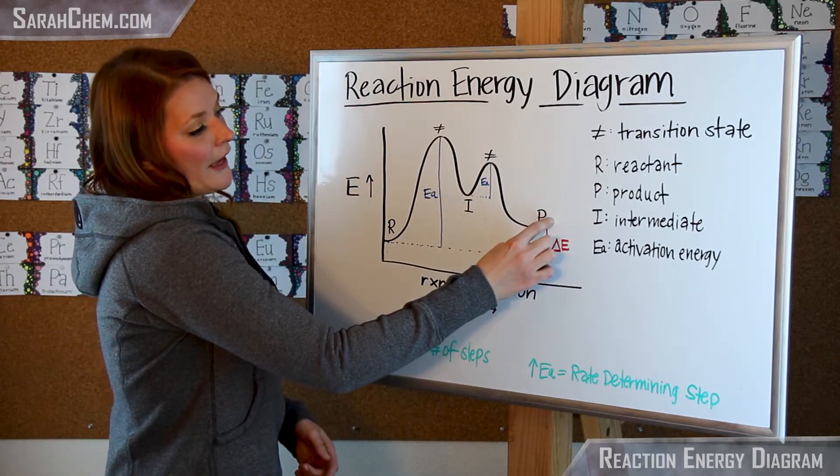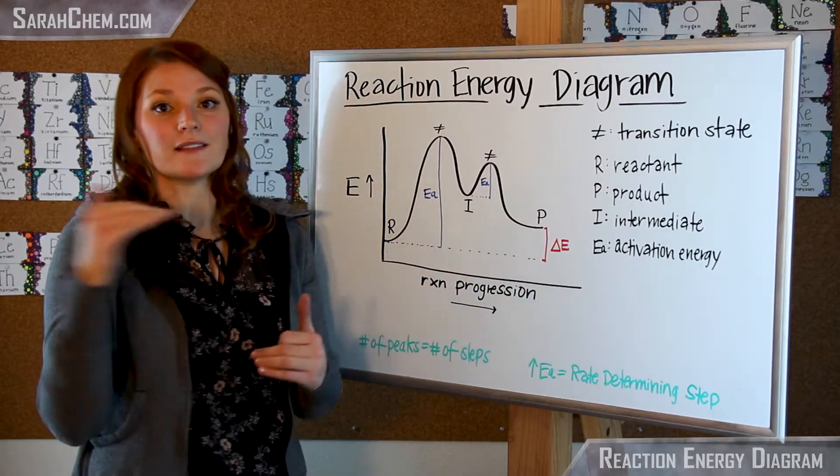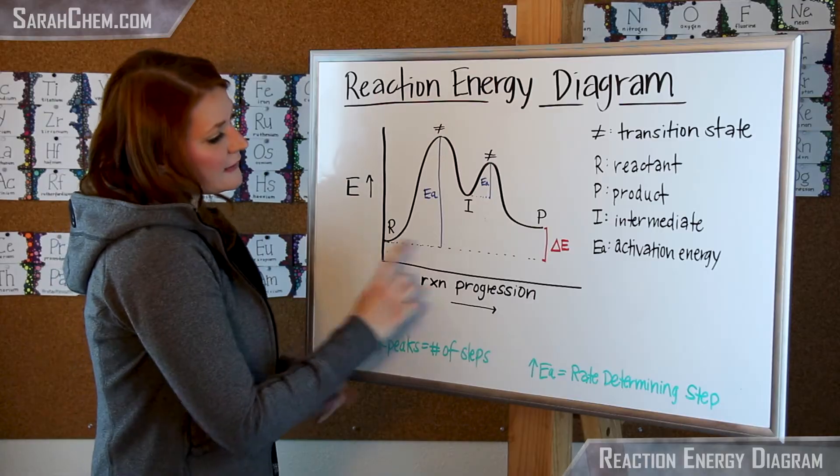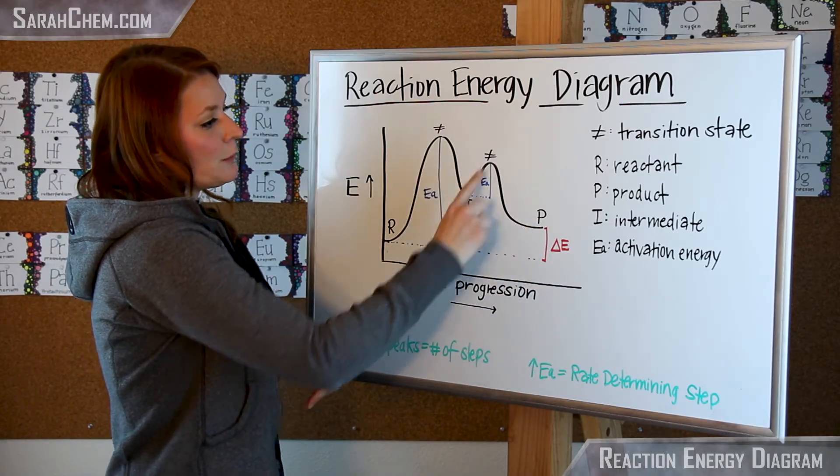At the other end here we have our product and that also is at the level that indicates the energy within the product that we're forming. As you can see, between R and P there are two peaks.